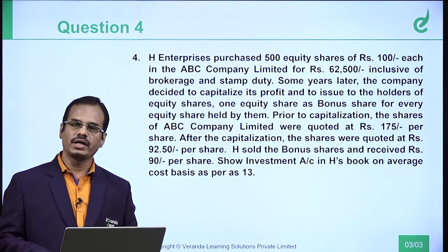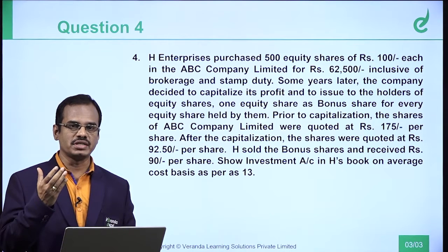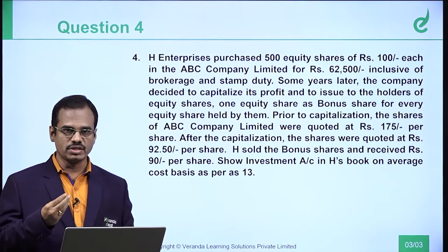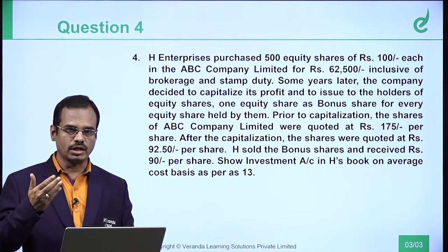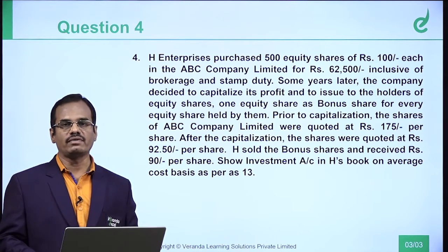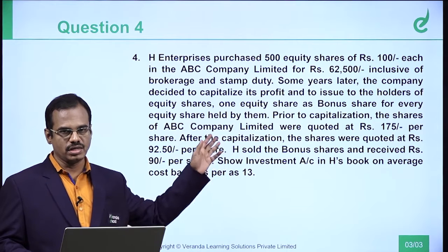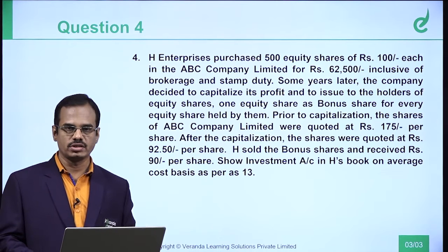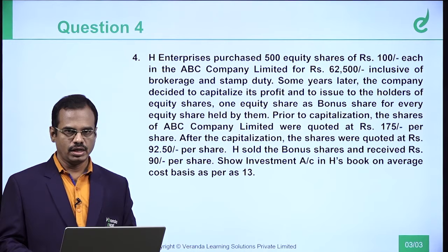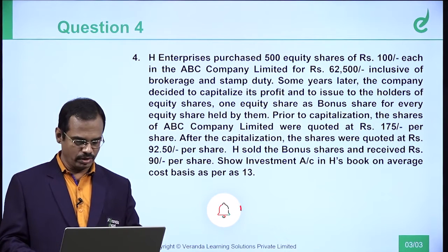Bonus shares also will have a cost, because bonus is not coming to us free of cost. No doubt it is issued without consideration, but we get it because of the cost already incurred. So we attribute, through average cost, a cost also for the bonus shares. That is the thesis across all these questions. When there is a bonus issue, only average cost can give a fair presentation — that is the viewpoint as per AS-13.